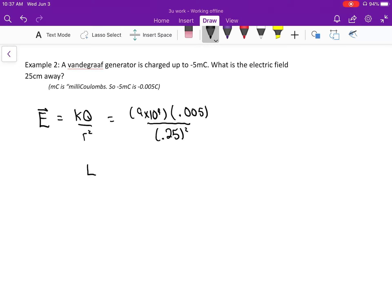When you crank that out, capital E with the vector hat, we get a way bigger number than the last example. This one's 720 million. It's got those funny units of newtons per coulomb again.